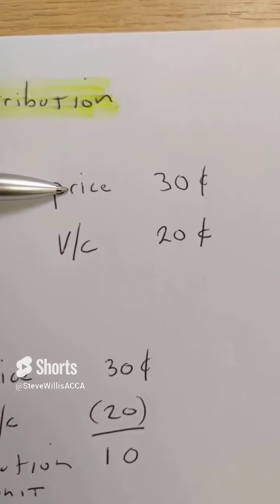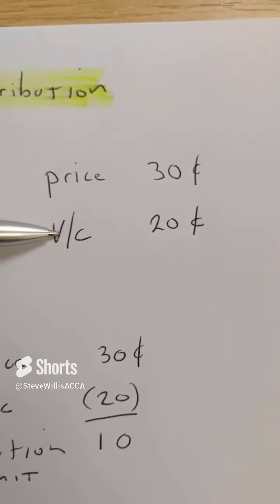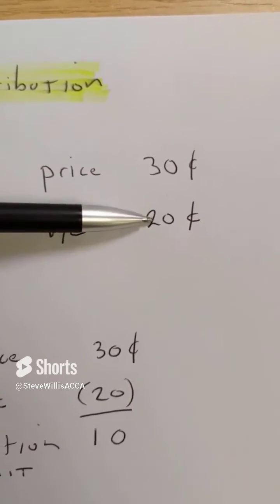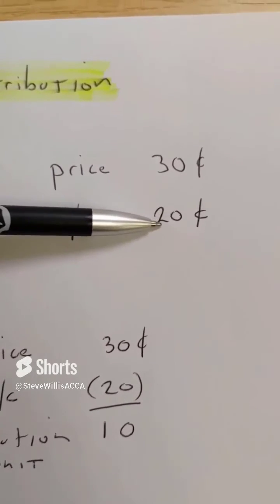My selling price is 30 cents. My variable costs are 20 cents per unit. Eggs, flour, butter, direct labor, etc.